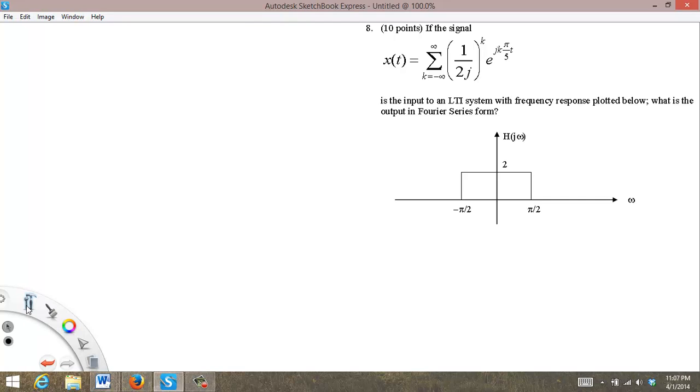So what I want to do is define first what our system is. We have e to the j k pi over 5t, so omega naught is equal to pi over 5.